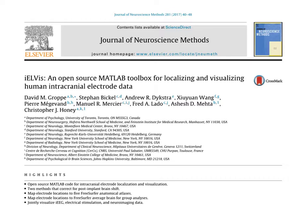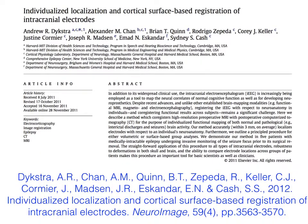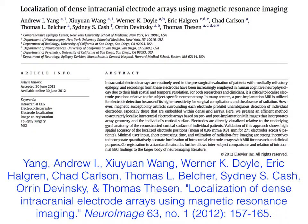Specifically, iELVIS consists of MATLAB and BASH programs for four general functions. Number one, identifying the anatomical locations of electrodes relative to pre-implant structural MRIs. In particular, we offer two methods for correcting electrolocations for post-implant brain shift: the first is an algorithm from Dijkstra and colleagues, and the second from Yong Wang et al.